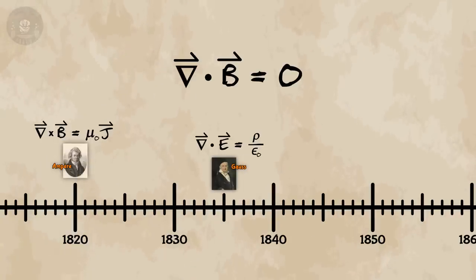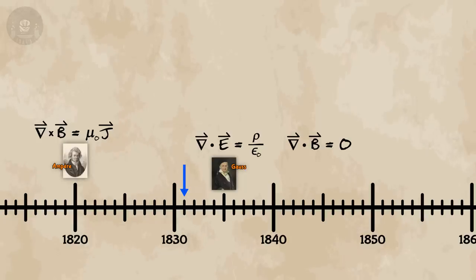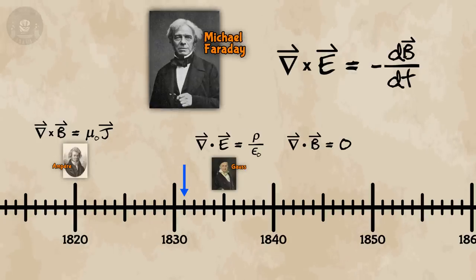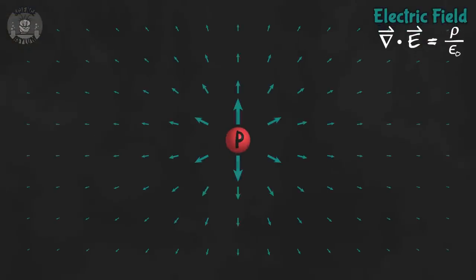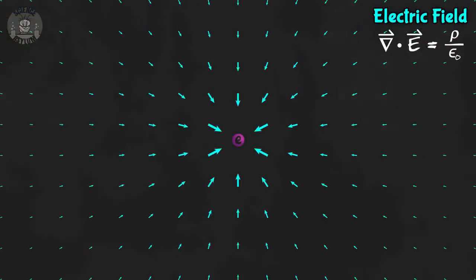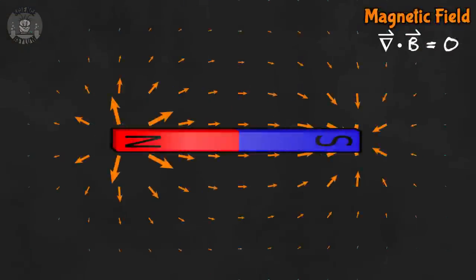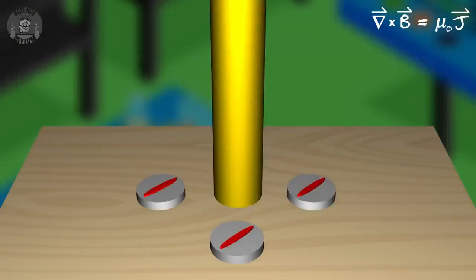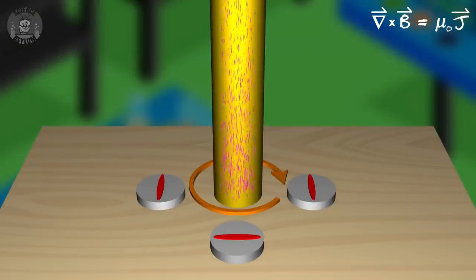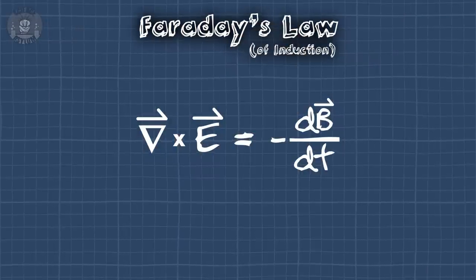That can't be the whole story, right? We've seen other laws in this series. There was a Gauss's law for magnetism too, and in 1831 we got something called Faraday's law — that brings the equation count up to four. Each of these laws says something about at least one of these fields. Gauss's law for electricity says electric fields point away from positive charges and toward negative charges. Gauss's law for magnetism says magnetic fields always form closed loops. Ampere's law says those closed loops wrap around moving charge. Faraday's law is the odd one out — it seems to connect the fields to each other.